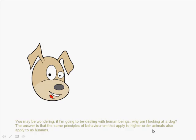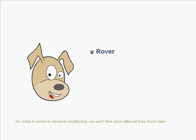You may be wondering, if I'm going to be dealing with human beings, why am I looking at a dog? The answer is that the same principles of behaviorism that apply to higher order animals also apply to us humans. So when it comes to classical conditioning, we aren't that much different from Rover here.